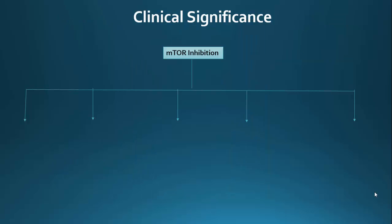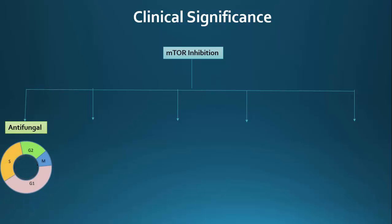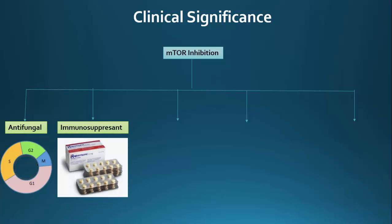Now that we have a basic understanding of mTOR and mTORC1, we can examine the clinical benefits of decreasing mTOR activity. Because rapamycin reduces the phosphorylation of other proteins, it ultimately decreases translation. In fungi, this causes arrest of the cell cycle in the G1 phase. Rapamycin is also used as an immunosuppressant in organ transplant procedures. More recent data shows that mTOR actually responds to the microenvironment to influence the differentiation and maturation of B and T cells in complicated ways.